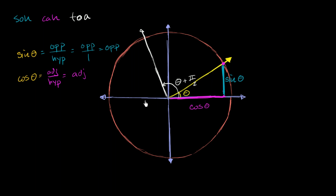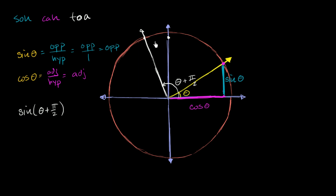What I want to explore in this video is: can we relate sine of theta plus pi over 2 to somehow sine of theta or cosine of theta? I encourage you to pause and think this through on your own. Well, from the unit circle definition, the sine of this angle — which is theta plus pi over 2 — is the y-coordinate. Another way of thinking about it, it's the length of this line in magenta. This right over here is the sine of theta plus pi over 2.